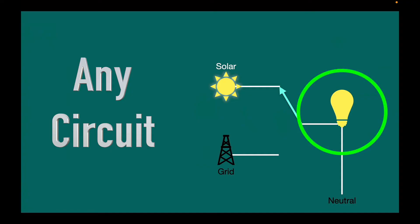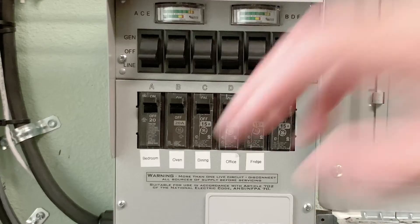This light bulb represents an existing circuit in your breaker panel. It could be a refrigerator, it could be outlets in your living room, etc.